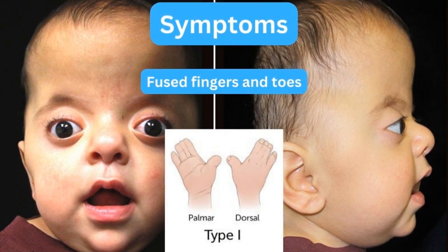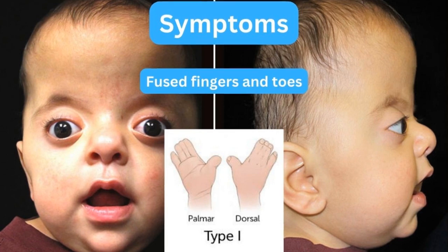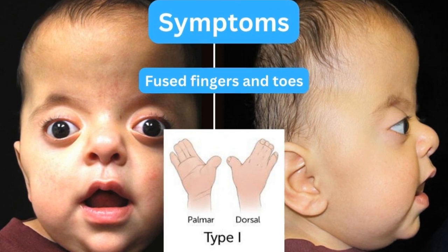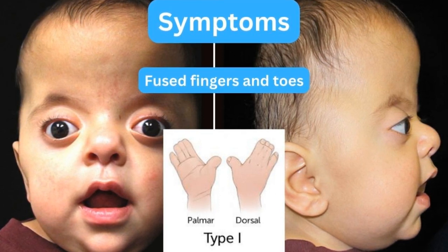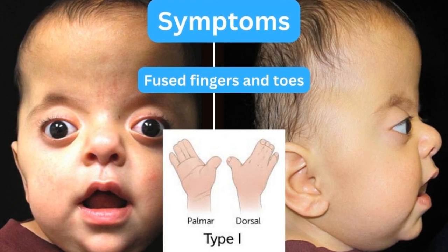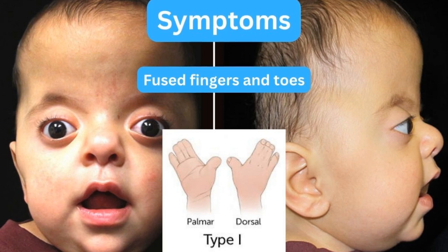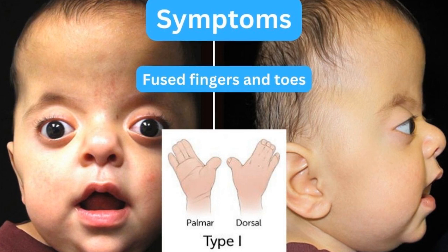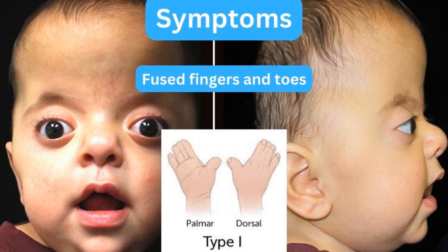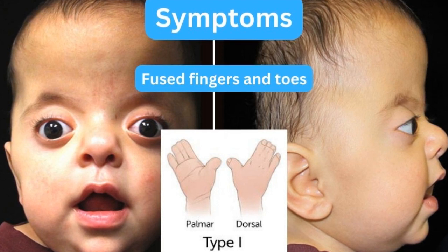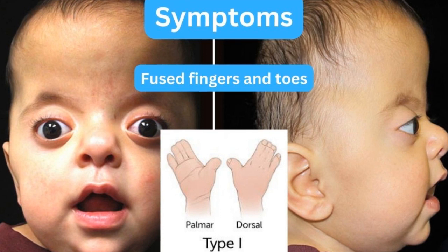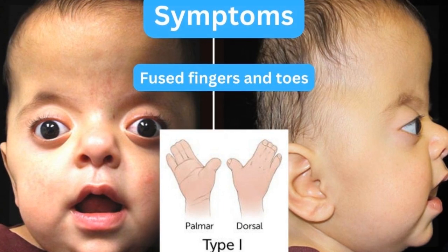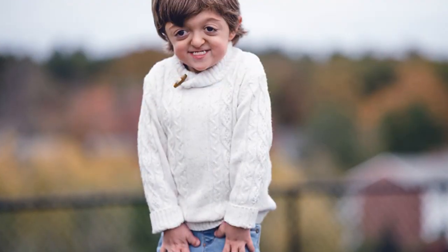I did not include all symptoms because most of them are similar to the condition I discussed previously — Crouzon syndrome. It has the same clinical features. The key difference is that Apert syndrome involves fused fingers and toes, which is how you can distinguish it from Crouzon syndrome and other clinical syndromes.